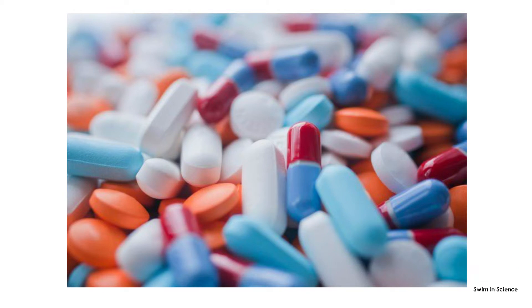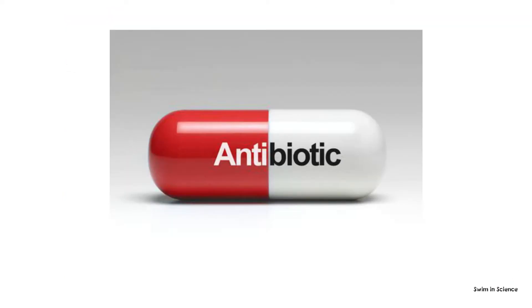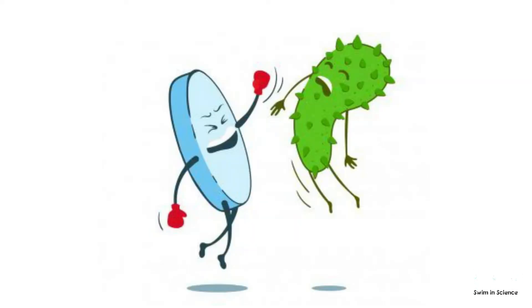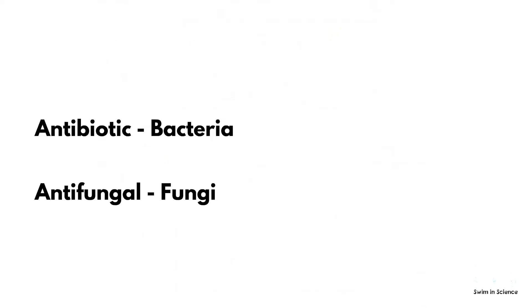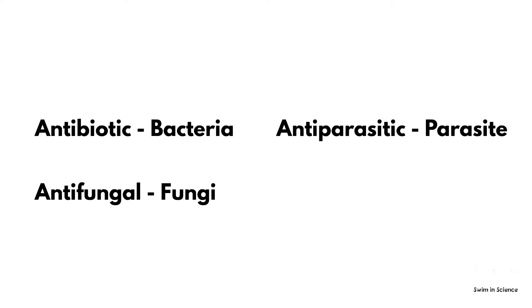Generally, the term antibiotics is used in place of antimicrobials. An antimicrobial is an agent that kills or inhibits the growth of a microorganism. These antimicrobials are grouped according to their target. For example, antibiotics act against bacteria, antifungals against fungi, antiparasitics are used against parasites, and antivirals are used against viruses.